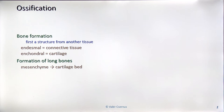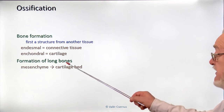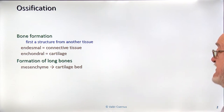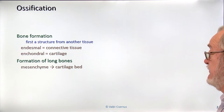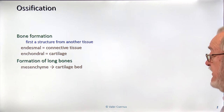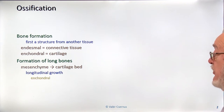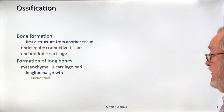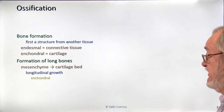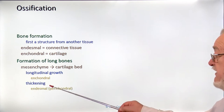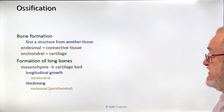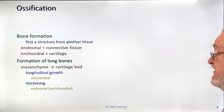The long bones develop first of all from a cartilage bed. The mesenchymal cells will form a cartilage which has the same size and shape as the bone, of course suitable to the particular age of the embryo. Then it grows. The longitudinal growth is due to the enchondral ossification, and the thickening is by adding additional layers on the surface from the perichondrium — this mechanism is endosmal ossification.